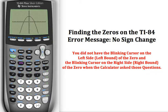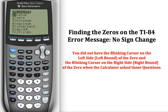I'm going to go in and demonstrate doing it wrong. If I do second and then calc, I'm going to hit two for zero because I'm trying to find a zero.